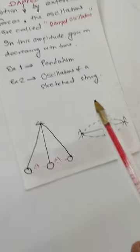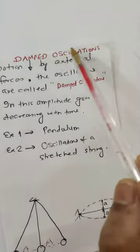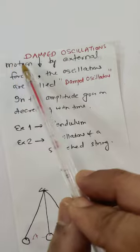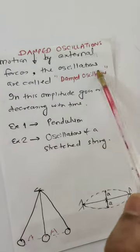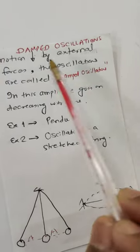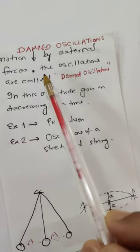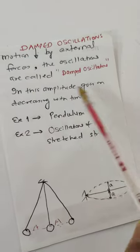So these oscillations are called damped oscillations. When the motion is reduced by external forces, the oscillations are called damped. Basically, we can say the amplitude goes on decreasing.